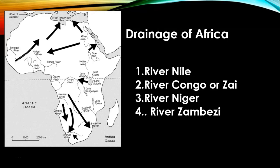River Congo and Zaire. The Congo is the second largest river of Africa after the Nile. Its length is about 4,700 kilometers. The Congo River rises in the highlands of northeastern Zambia, flows to west-central Africa, and drains into the Atlantic Ocean. River Niger. Niger is one of the major rivers in West Africa and rises from the highlands of Guinea. It flows for about 4,184 kilometers and finally drains into the Gulf of Guinea on the Atlantic Ocean.